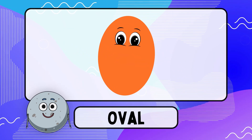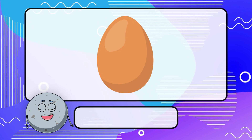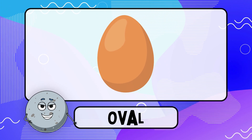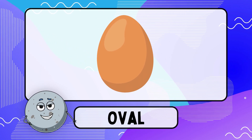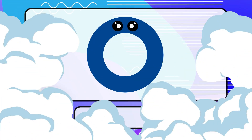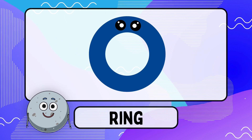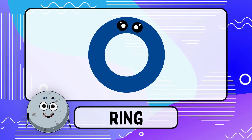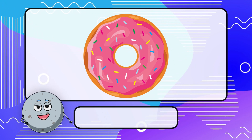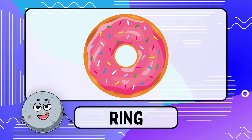Oval — the oval is similar to an egg in shape. Ring — the ring is a round shape with a hole in the middle.